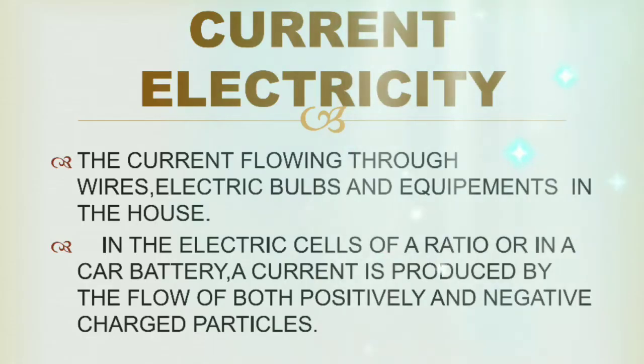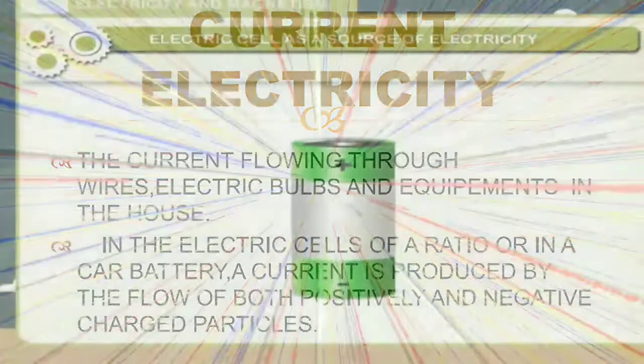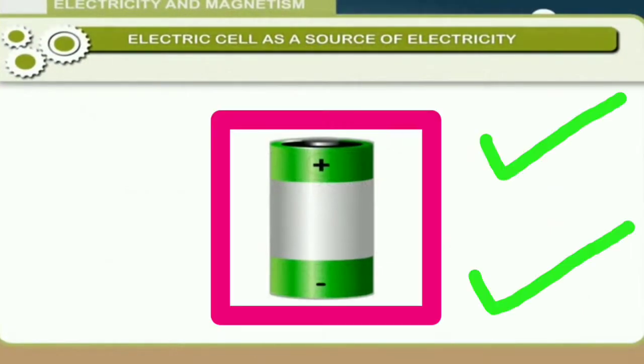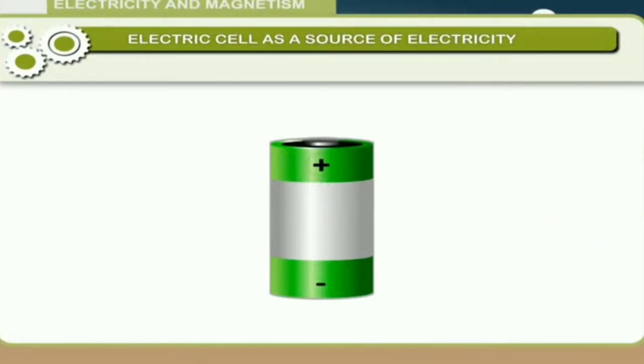In the electric cells of a radio or in a car battery, a current is produced by the flow of both negative and positively charged particles.